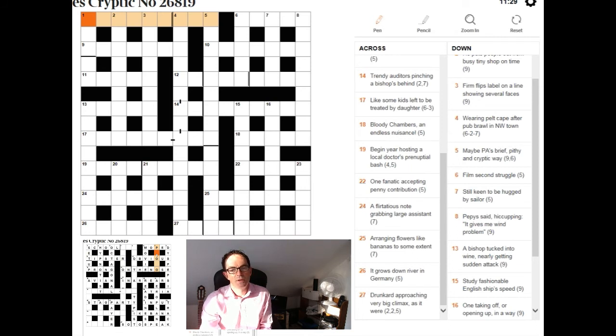And finally let's have a look at 5 down. Now this one I think is slightly harder to spot which side of the clue is the definition. I needed some letters to help me here. I can tell you that the definition is actually maybe PAs and what the clue is trying to say is that the answer here is an example of something that a PA will do.